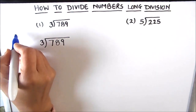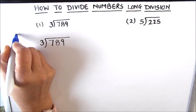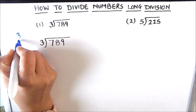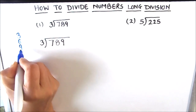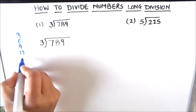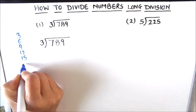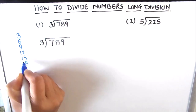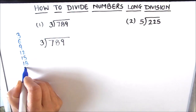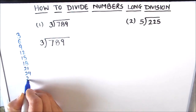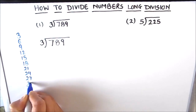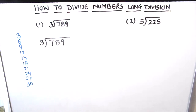We are going to divide 789 by 3. For that we are first going to write the tables of 3: 3×1=3, 3×2=6, 3×3=9, 3×4=12, 3×5=15, 3×6=18, 3×7=21, 3×8=24, 3×9=27, and 3×10=30. Now we will start dividing the numbers.